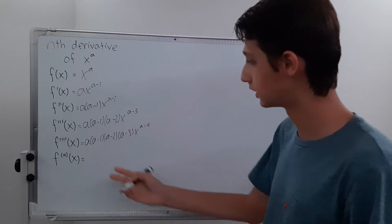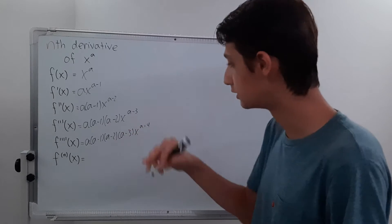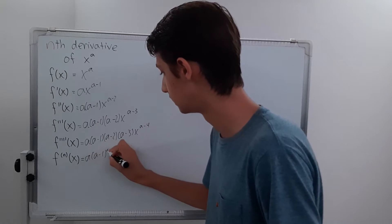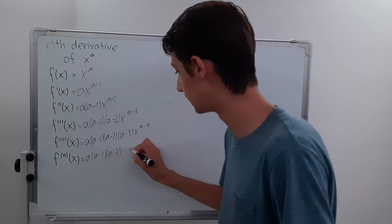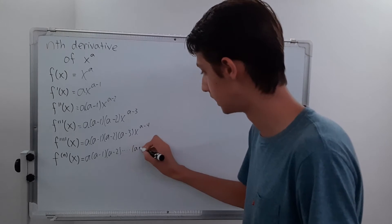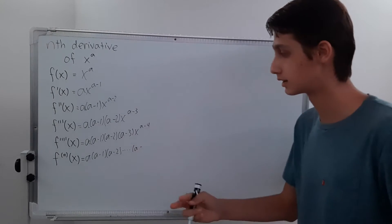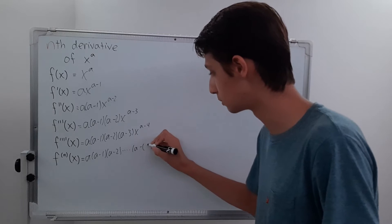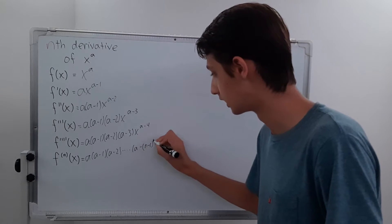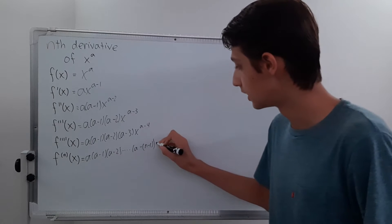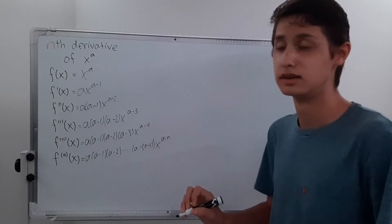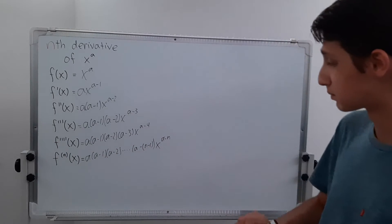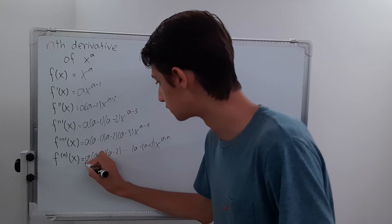We can pretty easily identify the general pattern. Our nth derivative is going to be a times a minus 1 times a minus 2, continuing all the way down to a minus (n minus 1) — make sure you put the parentheses — times x to the a minus n. The number subtracted matches the derivative number, so our exponent is always a minus n.